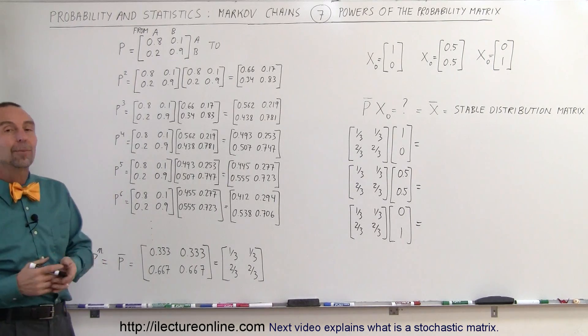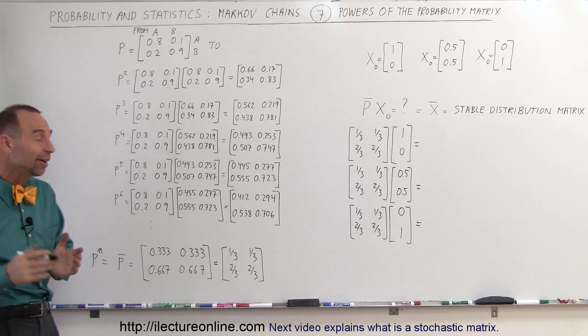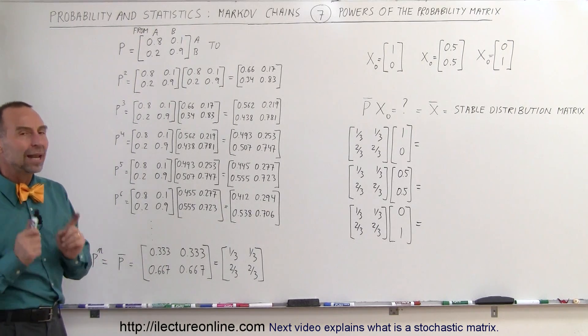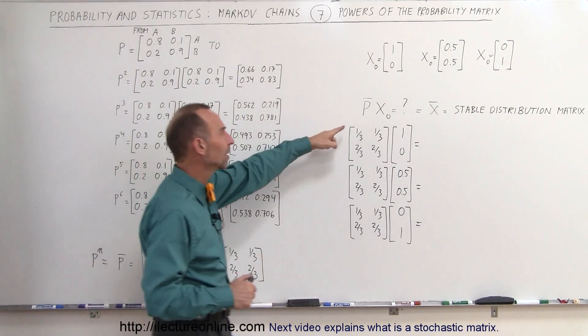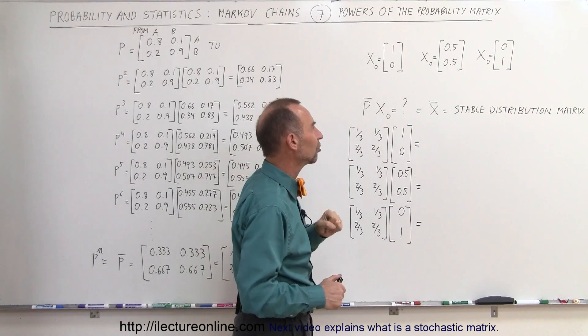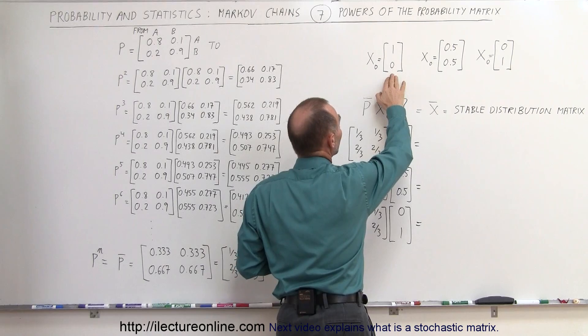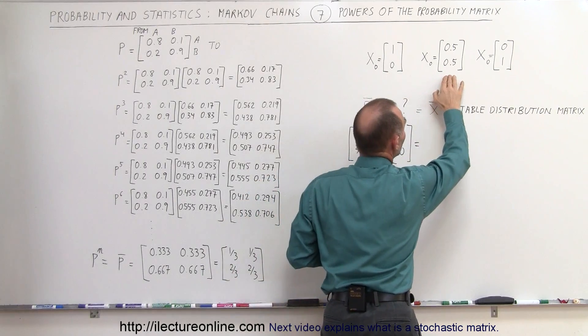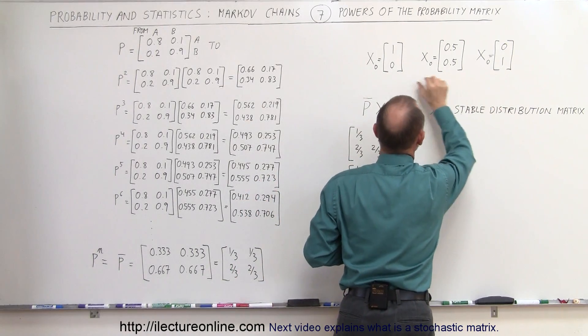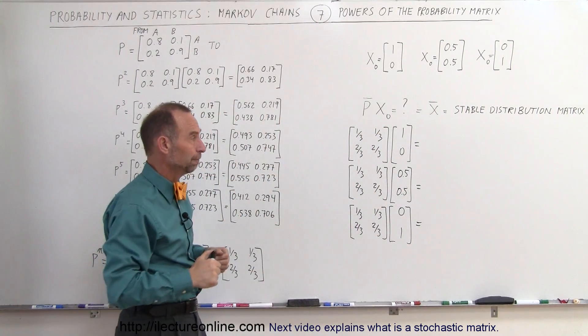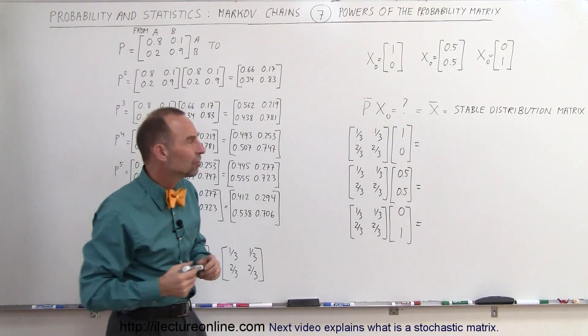And of course, I didn't want to take up all that board space, but if you do this yourself about 12 times, you will get to this stable matrix. Now what happens when we take this stable matrix and multiply it times the initial condition, regardless what the initial distribution is. So for example, let's start with this initial state, or this initial state, or this initial state, multiply that times this stable probability matrix to the n power. And let's see what happens in each case.